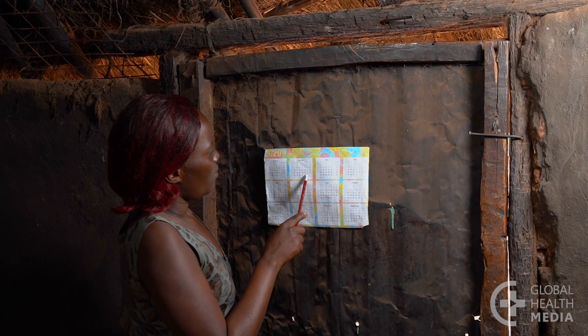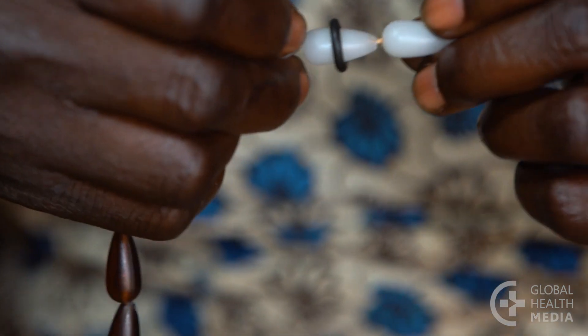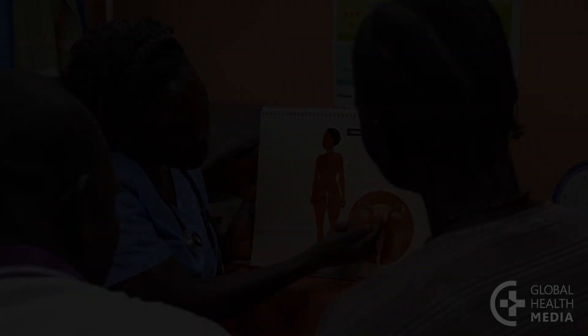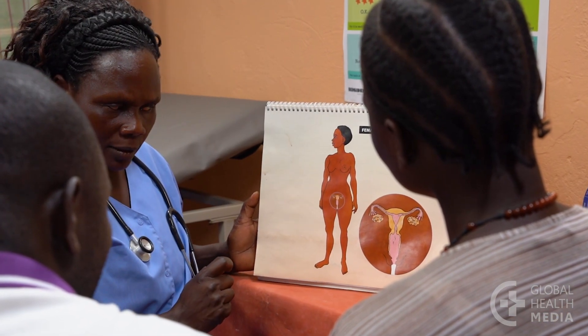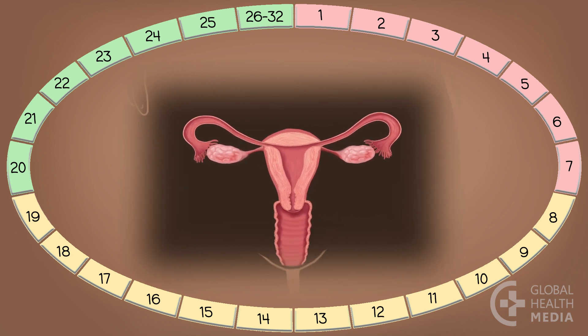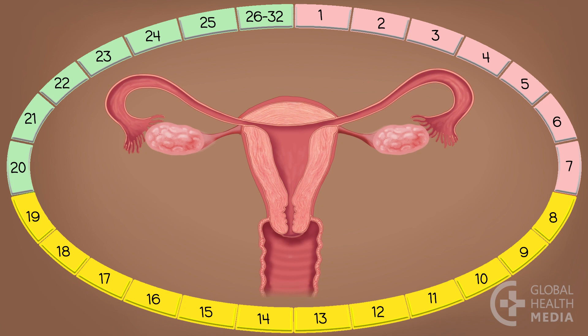This method helps you figure out the days of your cycle when you're most likely to get pregnant. On those days you either avoid sex or use condoms to prevent pregnancy. You can only get pregnant during your fertile time of the month. Each month, soon after your monthly bleeding, your body prepares itself for starting a pregnancy. These next days — the eighth day through the 19th day of every cycle — are the days you can get pregnant.